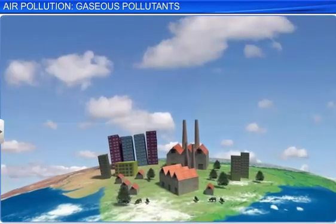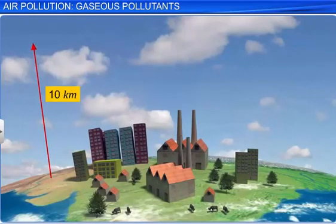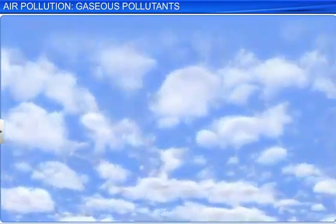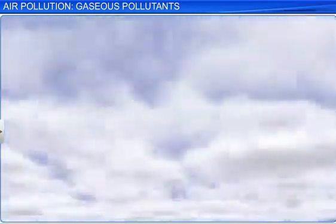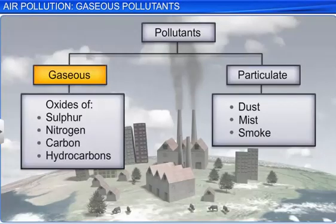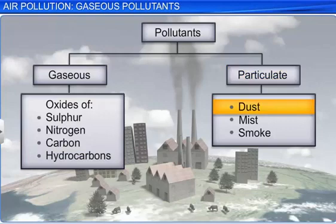The troposphere is the lowest region of the Earth's atmosphere in which living organisms live. It extends up to 10 km above sea level. Strong air movements and the formation of clouds take place in the troposphere. Particulate matter and gaseous pollutants cause pollution in this region. The major gaseous pollutants include the oxides of sulfur, nitrogen and carbon, besides hydrocarbons. The major particulate pollutants are dust, mist and smoke.